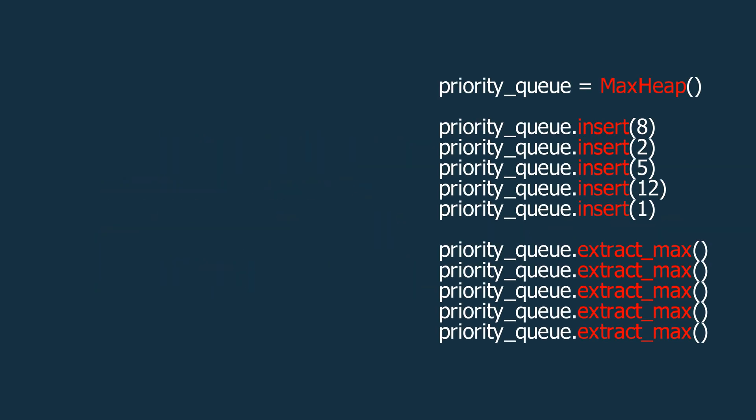Now, let's build a priority queue using a heap. A priority queue is a special type of queue, where each element has an associated priority. When we insert elements, they are arranged based on this priority, and when we pop elements, the one with the highest priority is removed first.